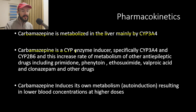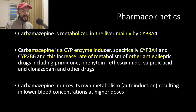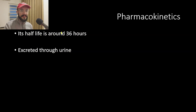Carbamazepine is a CYP enzyme inducer — it specifically induces CYP3A4 and CYP2B6, leading to increased rate of metabolism of other anti-epileptic drugs and other drugs metabolized by these enzymes. Examples of other anti-epileptics affected include primidone, phenytoin, ethosuximide, valproic acid, and clonazepam. Interestingly, carbamazepine also induces its own metabolism — a process called auto-induction — resulting in lower blood concentrations at higher doses. Its half-life is around 36 hours and it is excreted through urine.